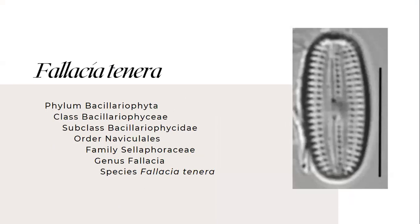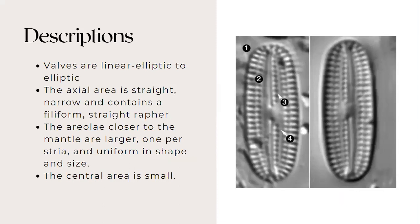Next is the Fallacia tenera. This species belongs to the family Sellaphoraceae. For its description, valves are linear to elliptic. The axial area is straight, narrow, and contains a filiform straight raphe.